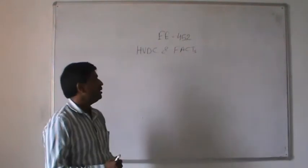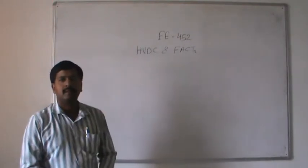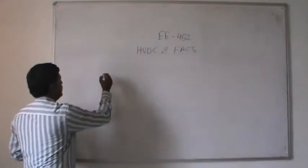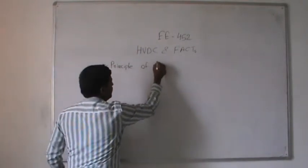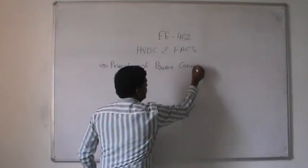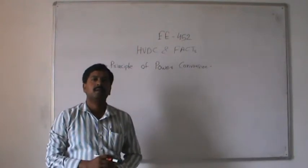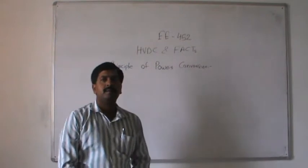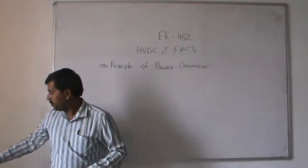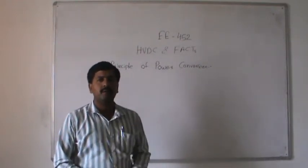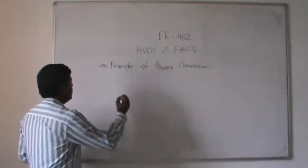Today we will discuss the second lecture of HVDC. In this lecture we will discuss the principle of power conversion — how the HVDC station or converter station converts AC power into DC power, and similarly at the receiving end, DC power into AC power. There are different types of converters available for converting AC into DC.